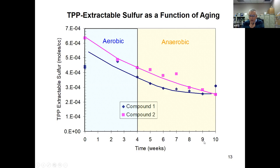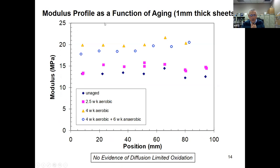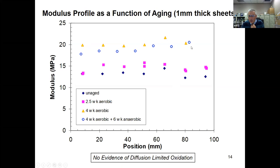Our modulus profile measures from the outside edge to the middle to the outside edge of our one-millimeter thick slabs. The unaged sample is shown, then two and a half weeks aerobic, then four weeks aerobic, then four weeks aerobic plus six weeks anaerobic. There is no change during the six weeks of anaerobic aging and no evidence of non-uniformity, confirming no diffusion-limited oxidation — all aging was homogeneous through the thickness.